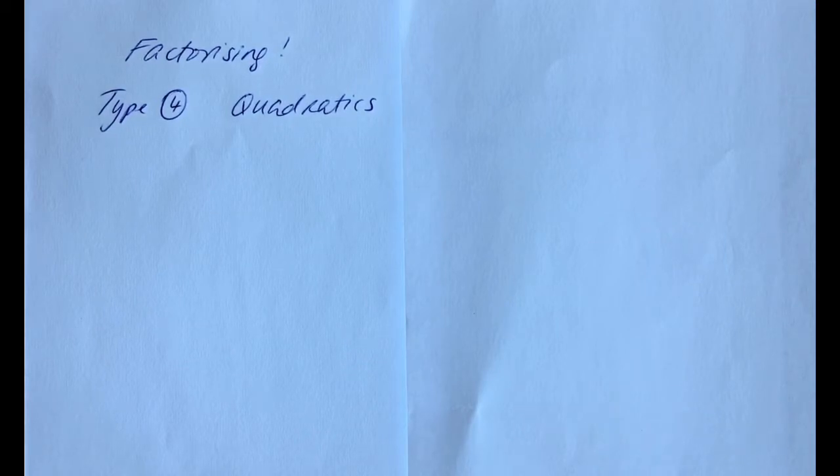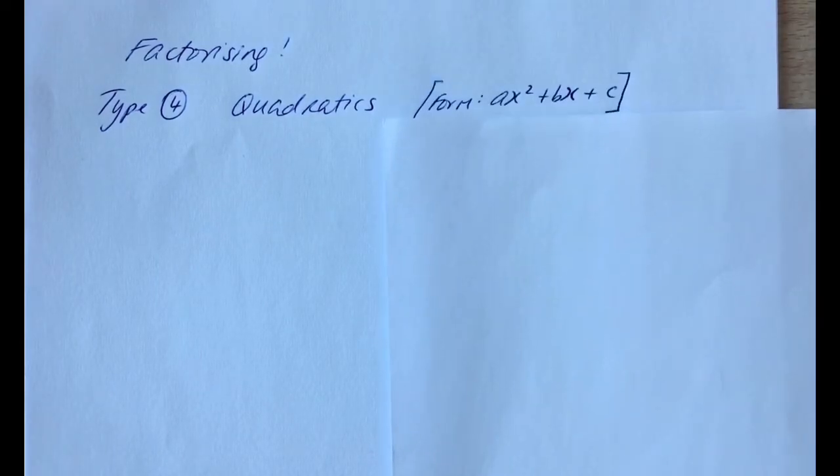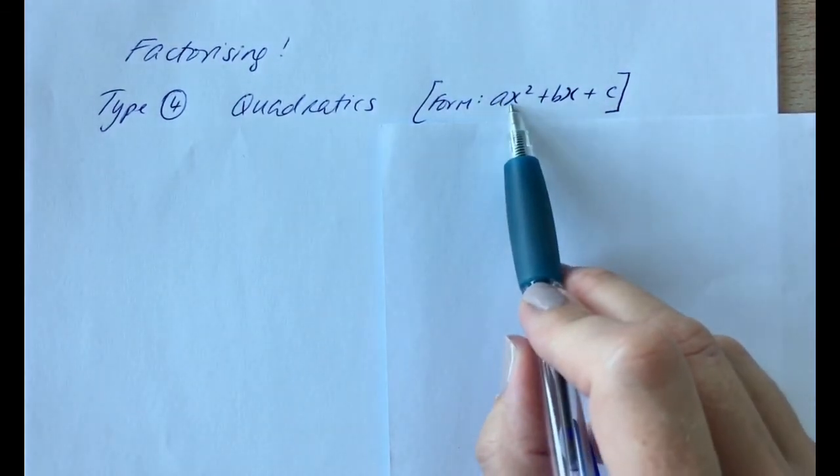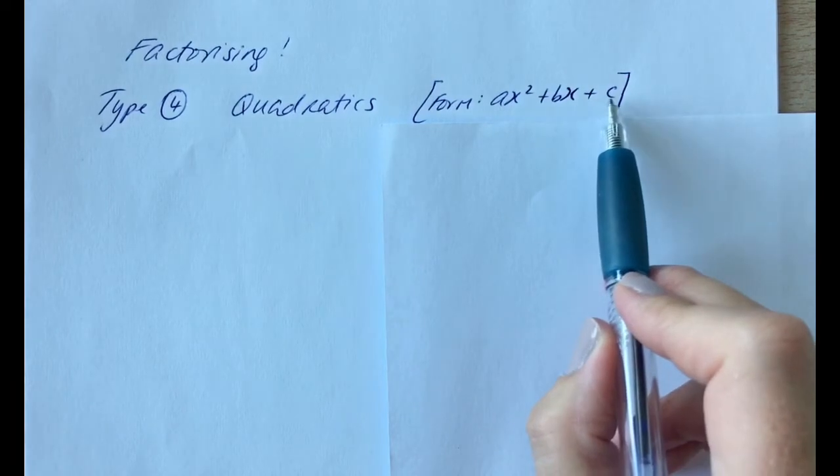Now, when we're talking about quadratics, obviously a quadratic is anything that has an x squared term. But for this type, we're specifically talking about quadratics that have the form ax squared plus bx plus c, where the a, b, and c are numbers, so something x squared plus something x plus something.